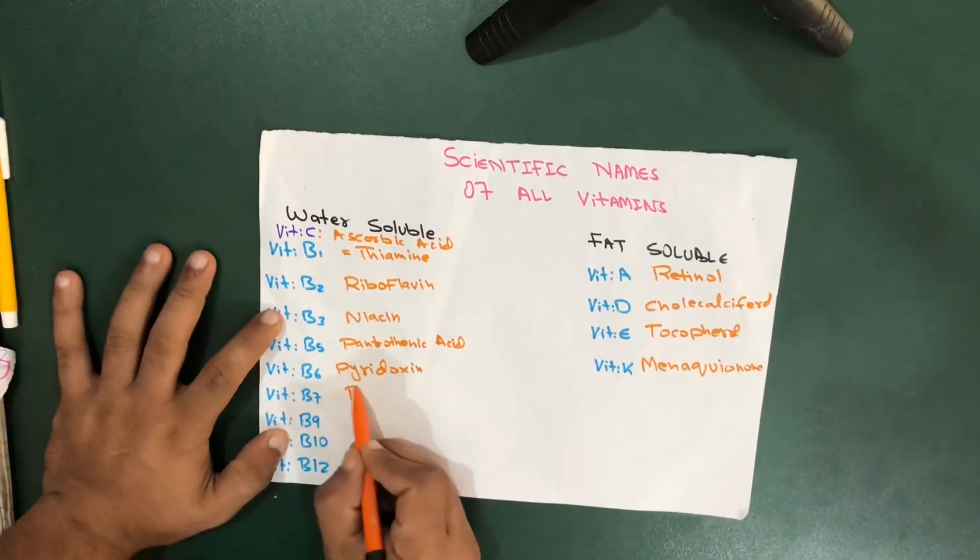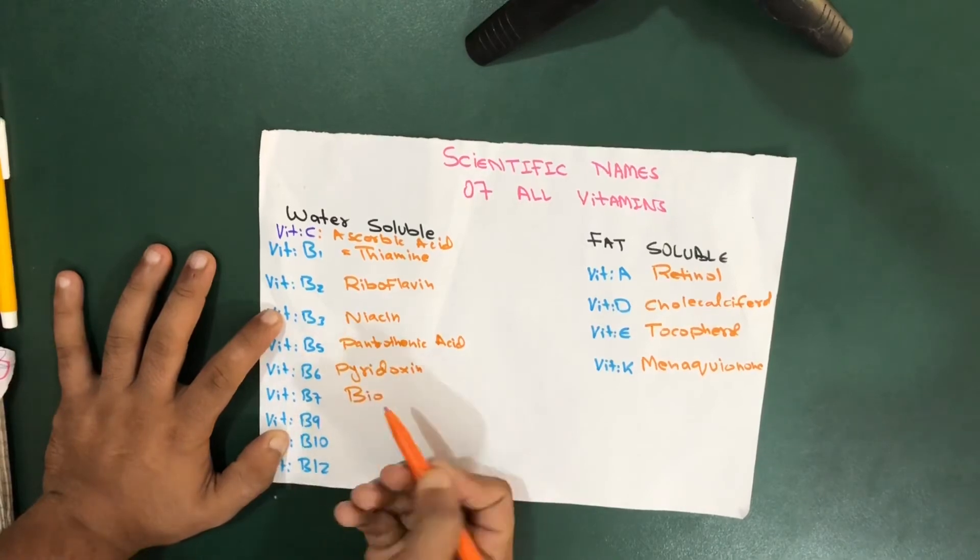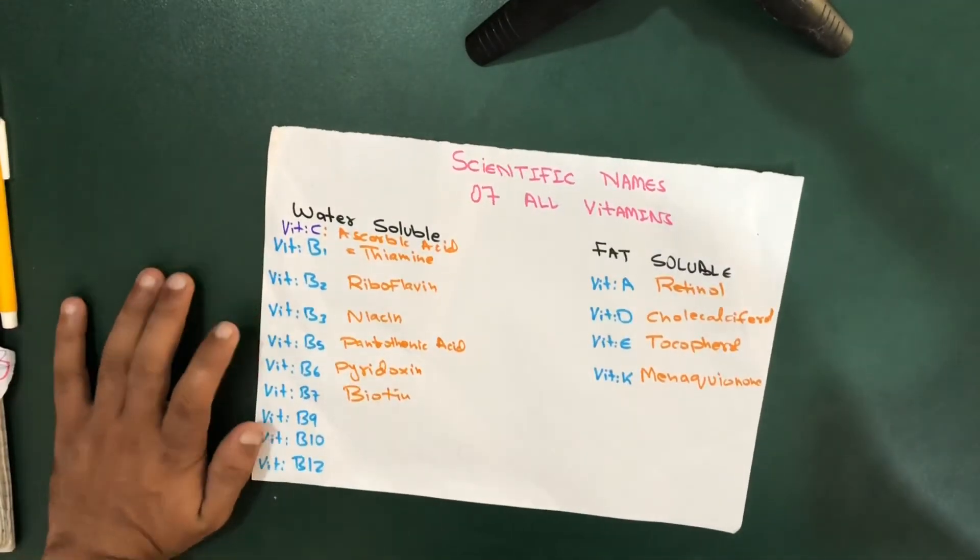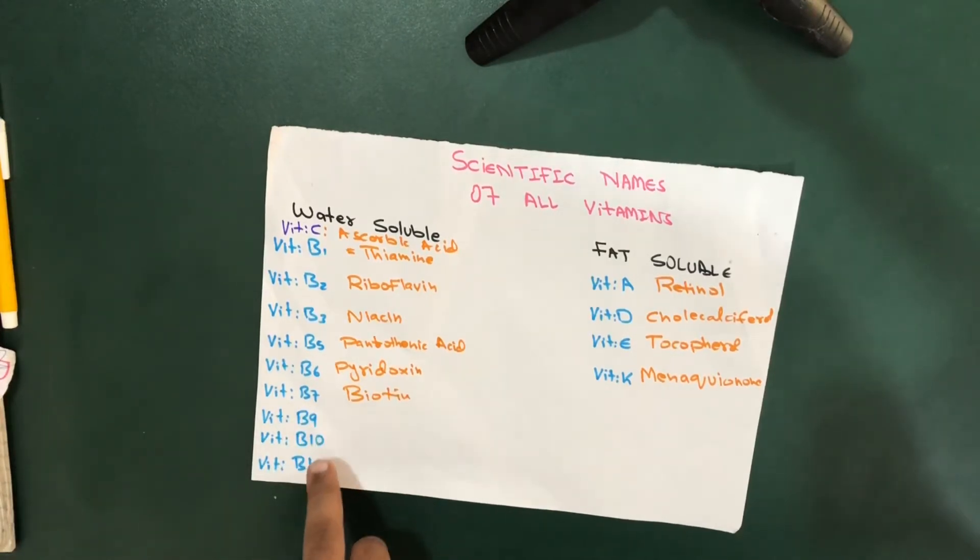For vitamin B7 we have biotin. The scientific name of vitamin B7 is biotin, which is mostly asked by teachers.